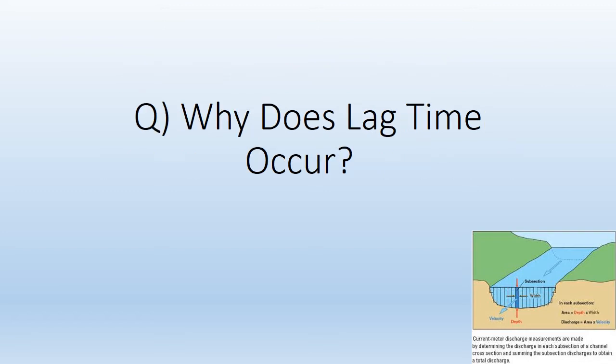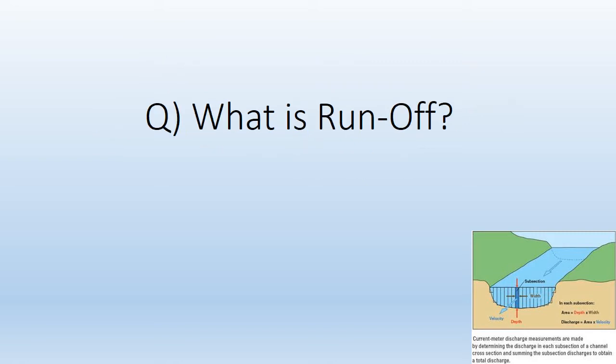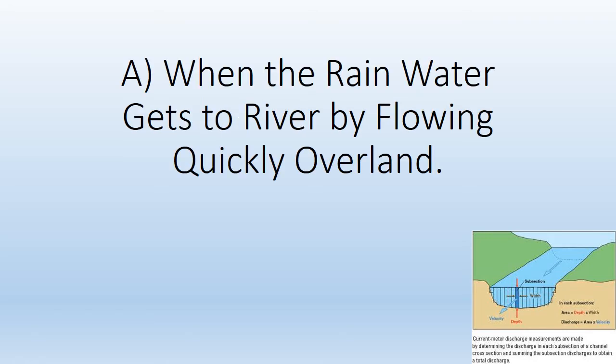Why does lag time occur? Because rainwater doesn't fall directly in the river channel. What is runoff? When the rainwater gets to the river by flowing quickly over land.